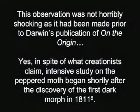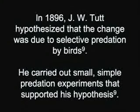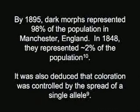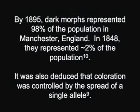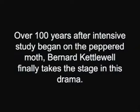In 1896, J.W. Tutt hypothesized that the change was due to selective predation by birds. He carried out small, simple predation experiments that supported his hypothesis. By 1895, dark morphs represented 98 percent of the population in Manchester, England; in 1948, they represented only about two percent of the population. It was also deduced that the coloration was controlled by the spread of a single allele — over a hundred years after intensive study began on the peppered moth.